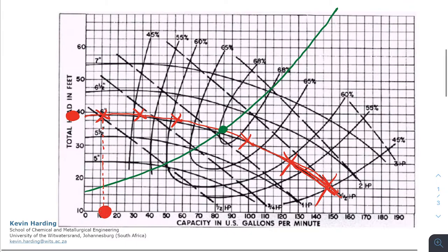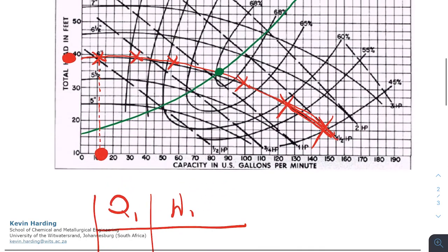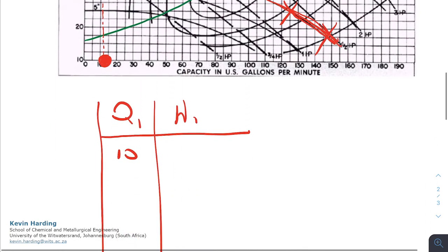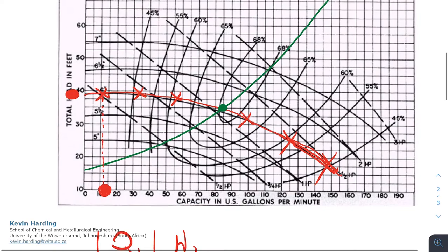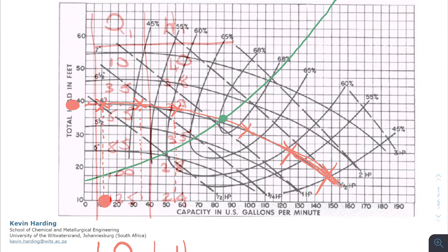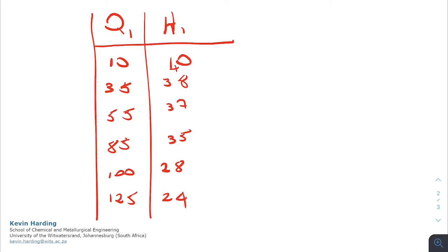From these points, we can read off a Q value and an H value. So we are going to set up a table of Q1 and H1. Our first point is somewhere around 10, and our second value is somewhere around 40. We will now look at several points along here for our Q1 and H1 values. So I've completed the table there for Q1 and H1.